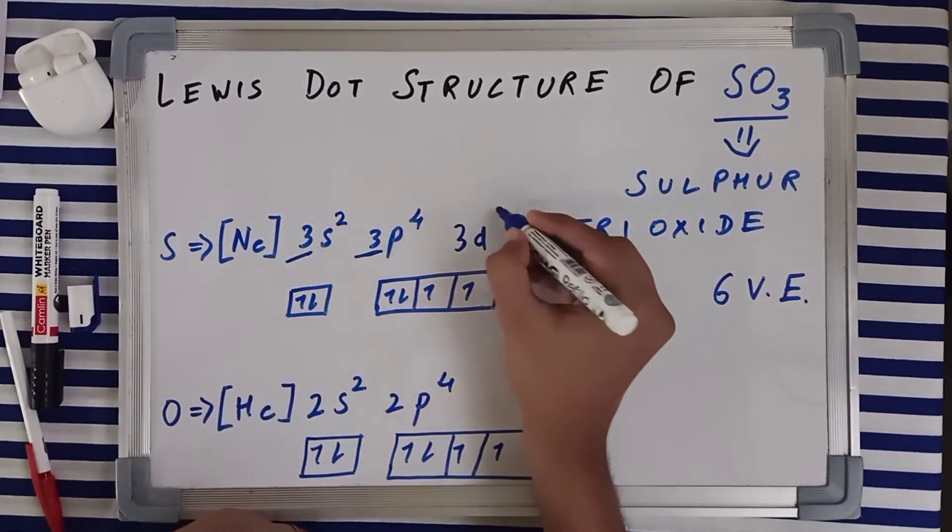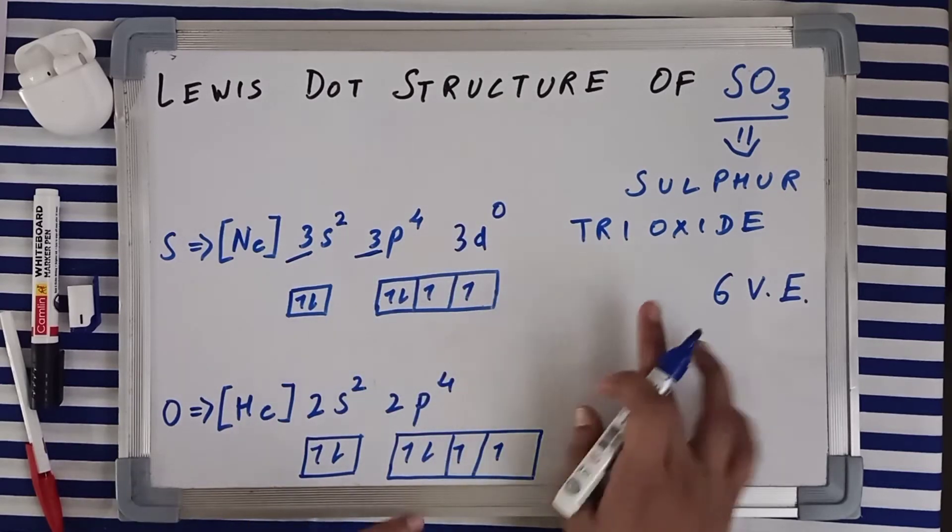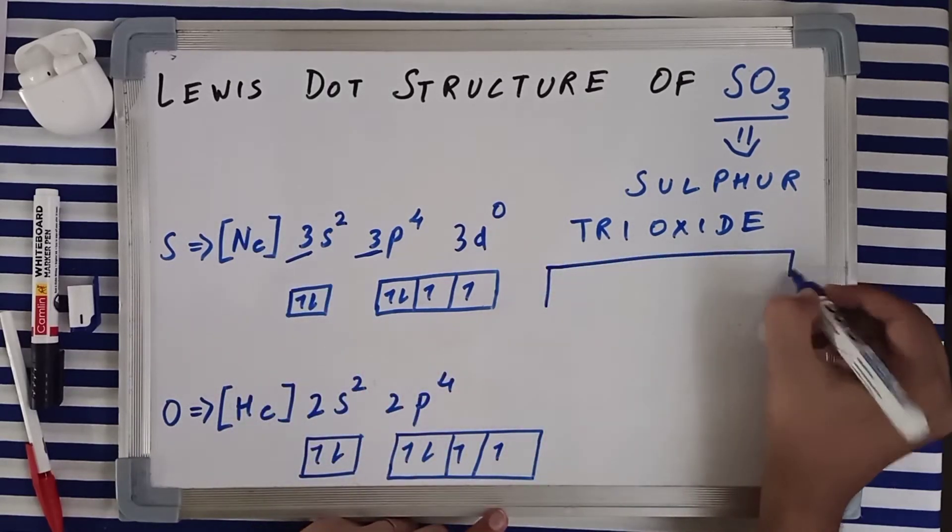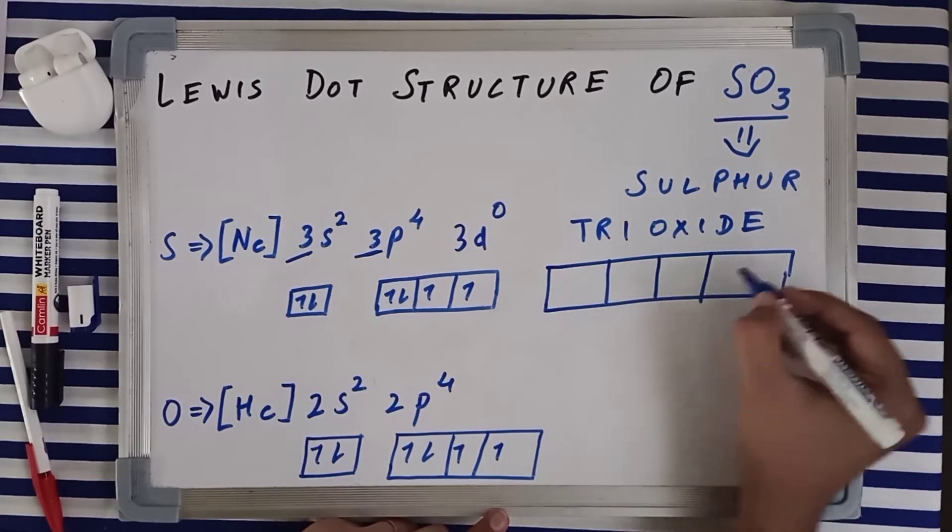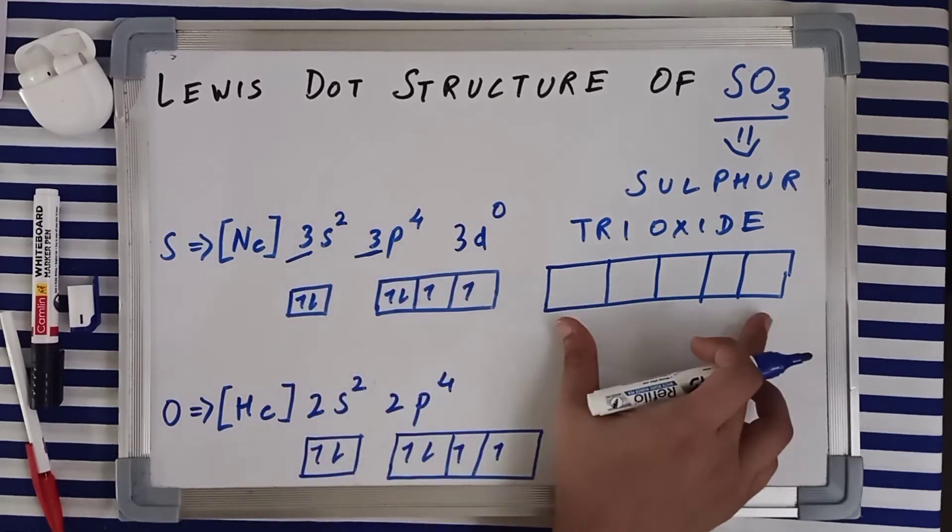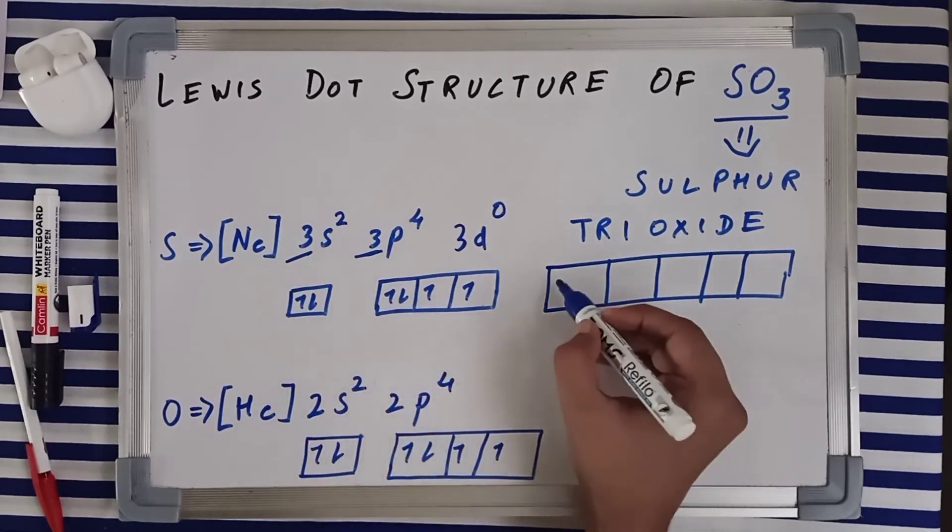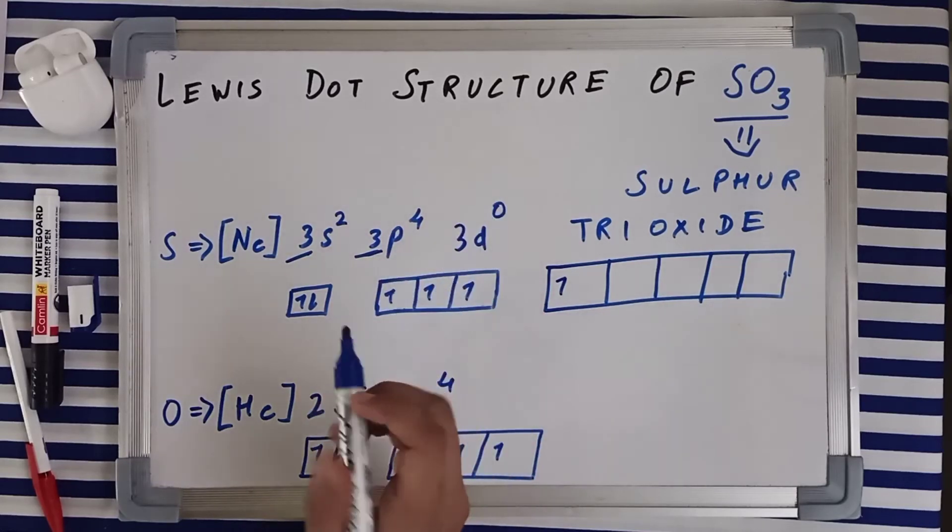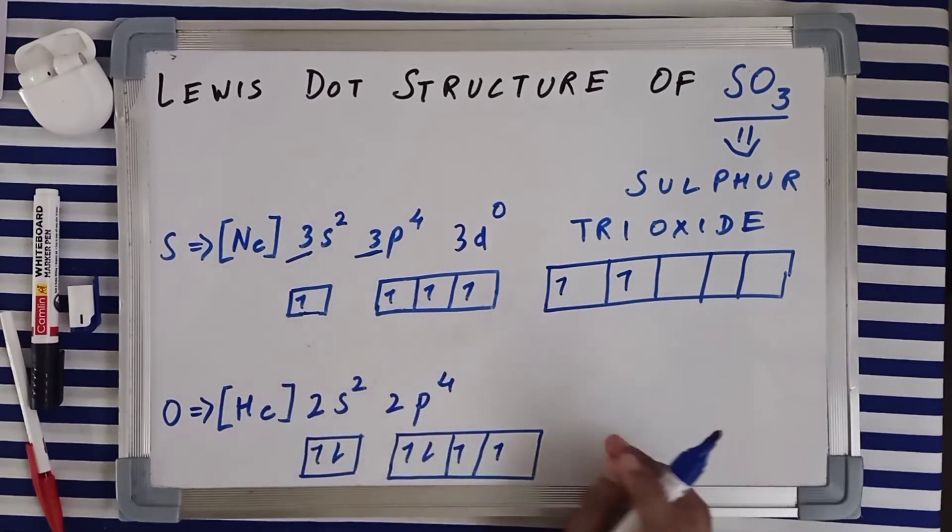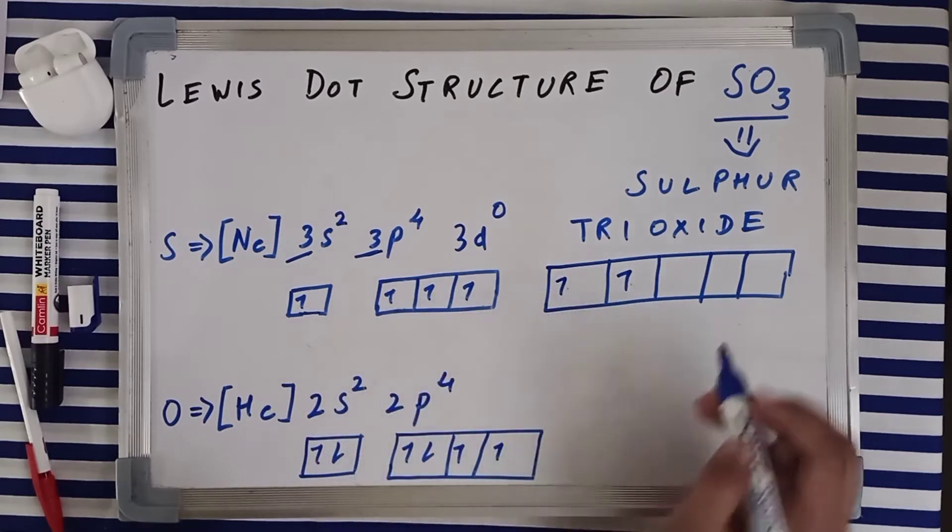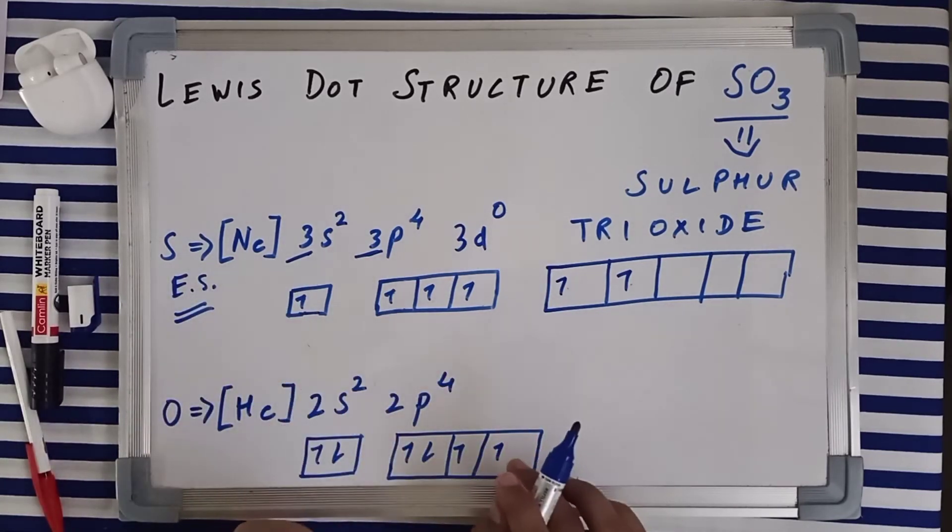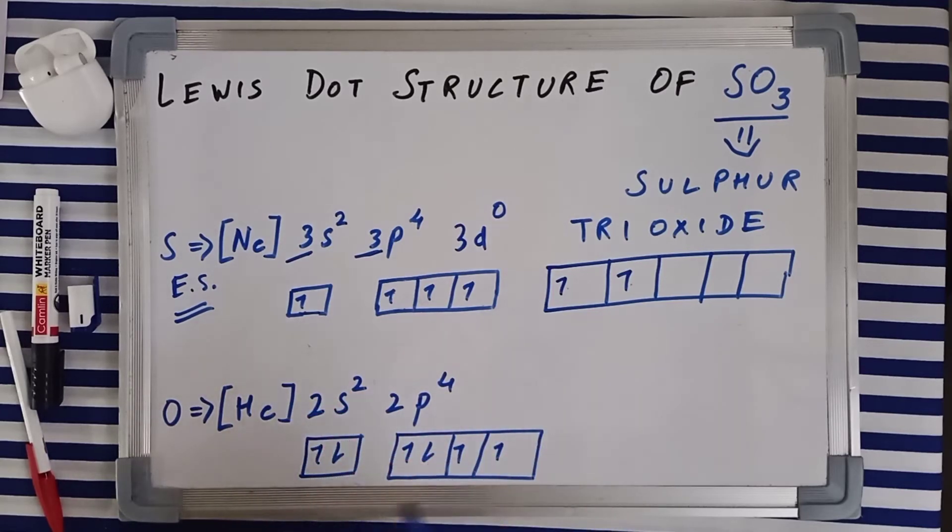Now what can happen is that there can be shifting of electrons if sulfur gains an excited state. So in 3d subshell you've got five orbitals. So in excited state of sulfur, there will be shifting of electrons from 3s and 3p to the 3d orbitals. So one of the electrons from 3p might jump and sit in one of the orbitals of 3d, and another electron from the 3s will jump and sit in one of the orbitals of 3d. Now if you count, you have got six unpaired electrons, which means now sulfur in its excited state can make six bonds. And we calculated the number of valence electrons which was 2 plus 4, six valence electrons.